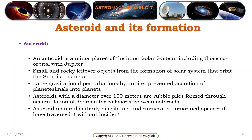An asteroid is a minor planet of the inner solar system, including those co-orbital with Jupiter. It is a small, rocky leftover object from the formation of the solar system that orbits the sun like planets. Due to large gravitational perturbations by Jupiter, accretion of planetesimals into planets is prevented. Asteroids with a diameter over 100 meters are rubble piles, formed through accumulation of debris after collisions between asteroids. Asteroid material is thinly distributed, and numerous unmanned spacecraft have traversed it without incident.